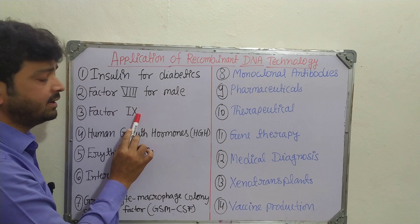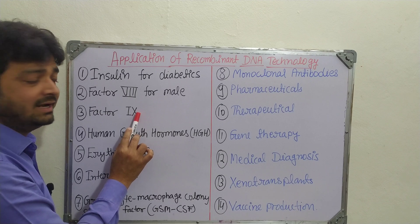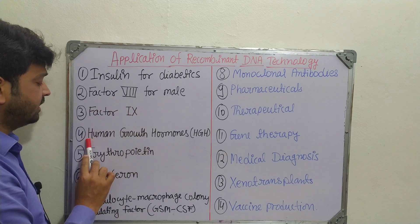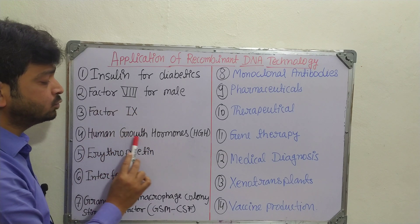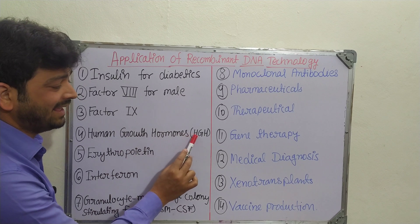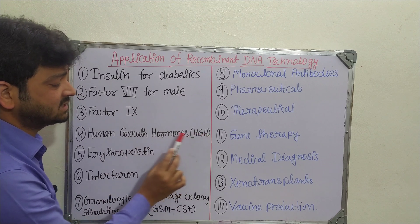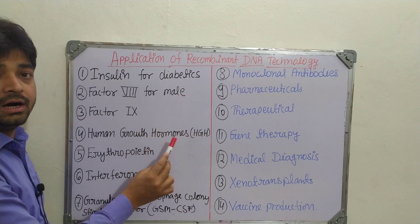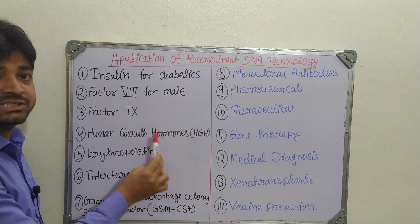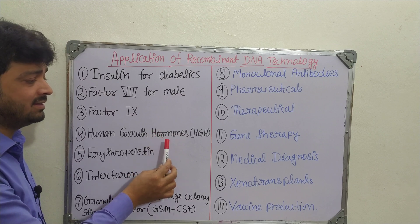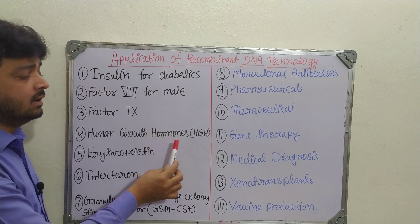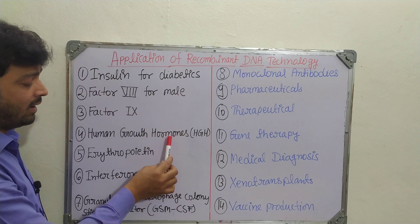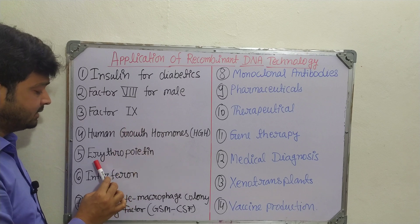The fourth application is Human Growth Hormone (HGH), which is an essential growth factor for human beings. This can also be produced in good quality using recombinant DNA technology.